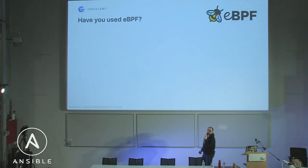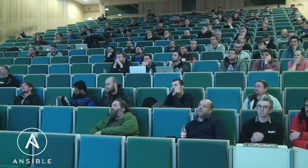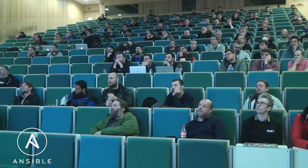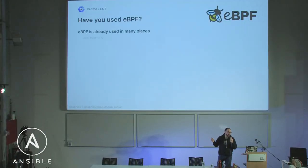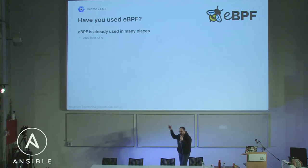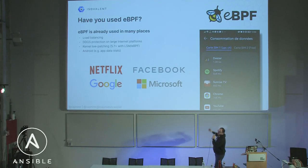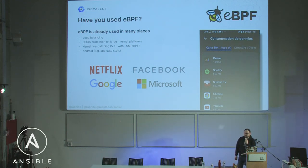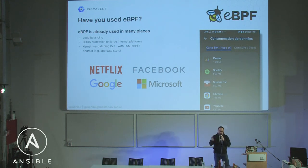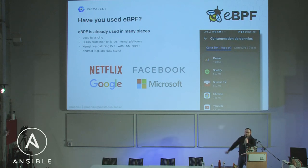Who has used eBPF before? Chances are you've probably used it without knowing it. eBPF is used in a lot of places. For example, Facebook uses it for load balancing. Many cloud providers use it for load balancing using XDP with eBPF. It's used for DDoS protection on a lot of cloud platforms, using XDP to remove unwanted packets before they get too deep in the kernel. It's also used for kernel live patching. And if you use Android, you've probably used eBPF — it's how the OS tells you which applications are using your bandwidth.